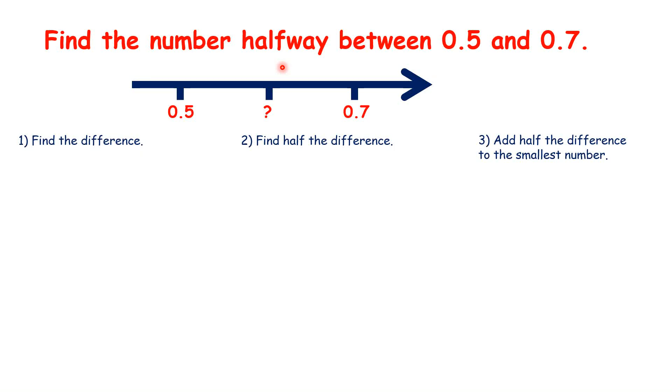You might have already seen my lesson on the trick to finding the number halfway between two numbers. We can follow the same steps with decimal numbers. So you probably already know which number is halfway between 0.5 and 0.7, but listen carefully because we can use the same steps with any decimal numbers.